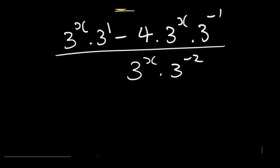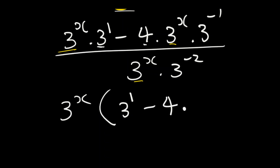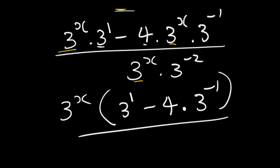From here, you check the exponents that belong to the same base. This is the same base with exponent x, same base exponent x, same base exponent x. So you factorize that base with that exponent. We say 3 to the power of x is factorized out — what remains is 3 to the power of 1, minus 4 multiplied by 3 to the power of minus 1, close bracket, divided by 3 to the power of x multiplied by 3 to the power of minus 2.